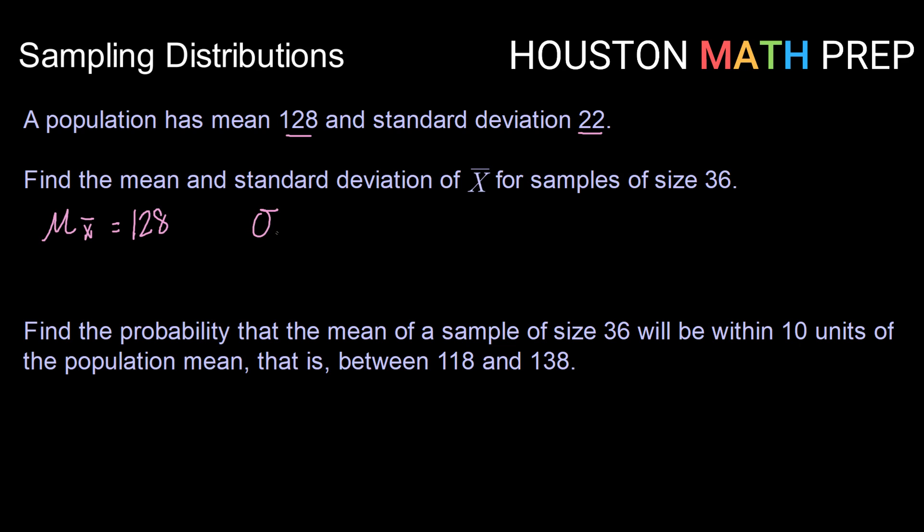And our standard deviation for our sample means, also known as standard error, will be sigma divided by the square root of n. So in this case that will be 22 divided by the square root of 36. Square root of 36 is 6. So 22 divided by 6 gives us 3.6 repeating. So there we have our mean and standard deviation for X bar.